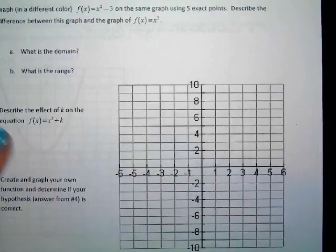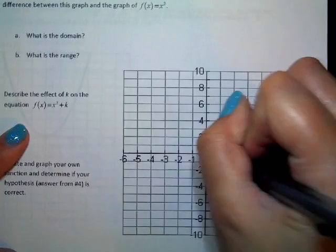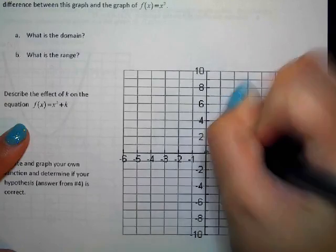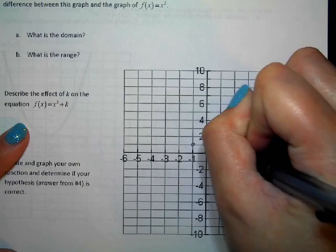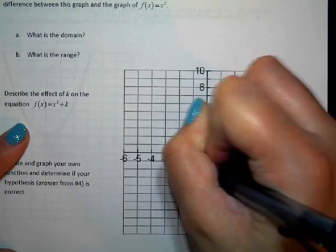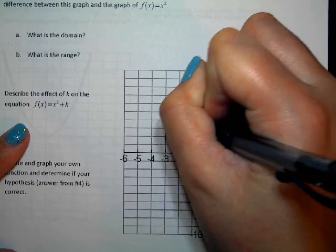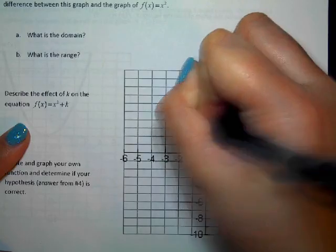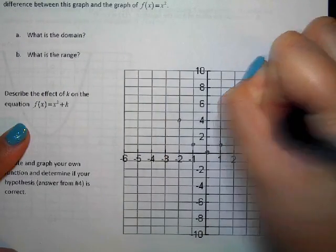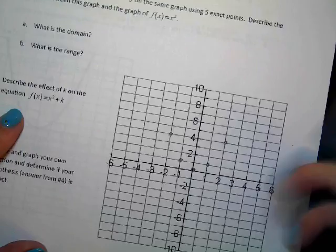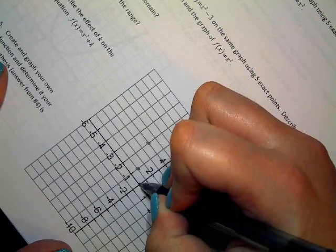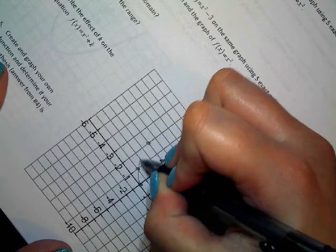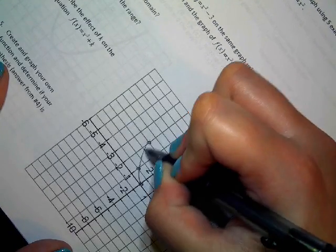And then down here, I'm going to sketch it real fast. We had the points: (0, 0), (-1, 1), (1, 1), (-2, 4), (2, 4). And then we made sure that this looked U-shaped, right?